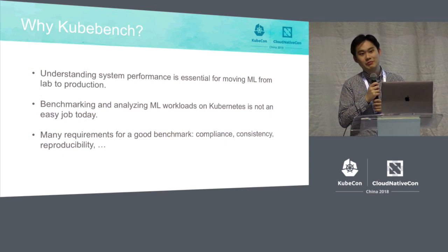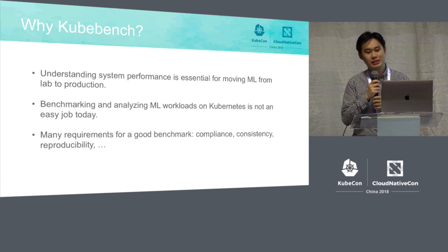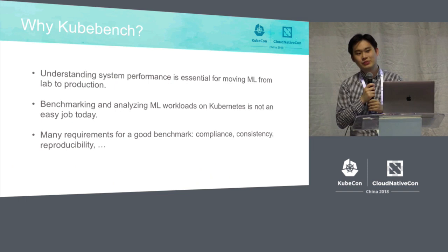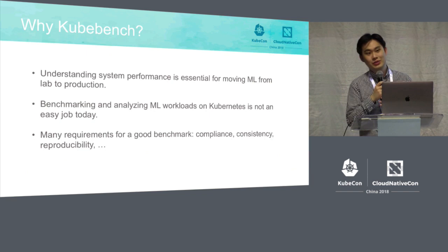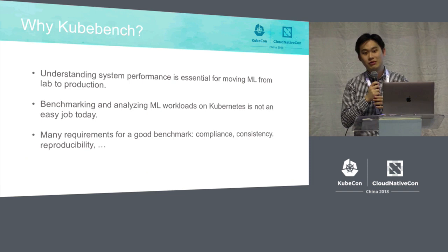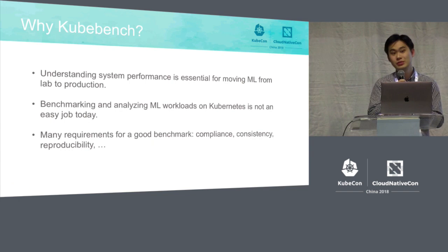We are really excited to see projects such as Kubeflow that brings together machine learning and Kubernetes, and how they can really boost AI production in the real world. However, while bringing machine learning from lab to reality, there's one essential step: we really need to understand how our software and hardware stack performs under expected workloads, and how we can plan the right amount of resources for the desired jobs that we want to run.